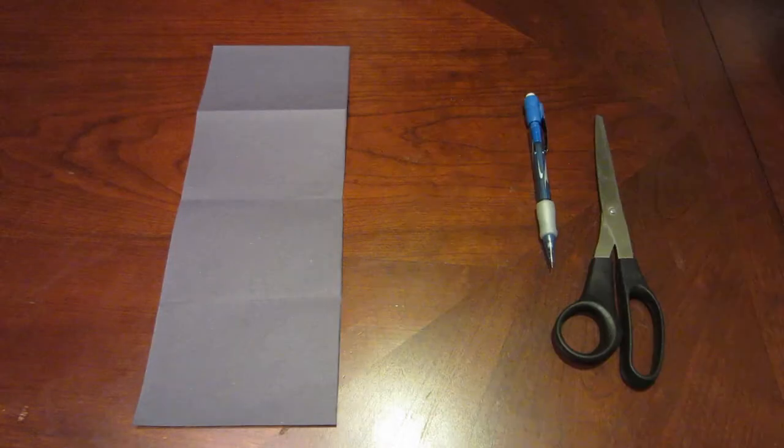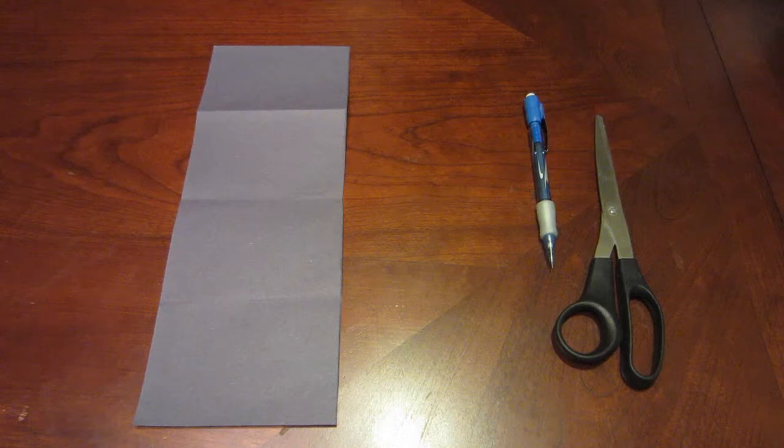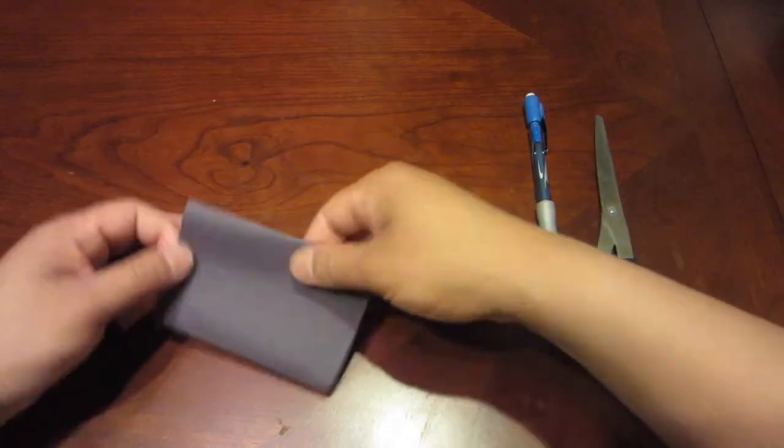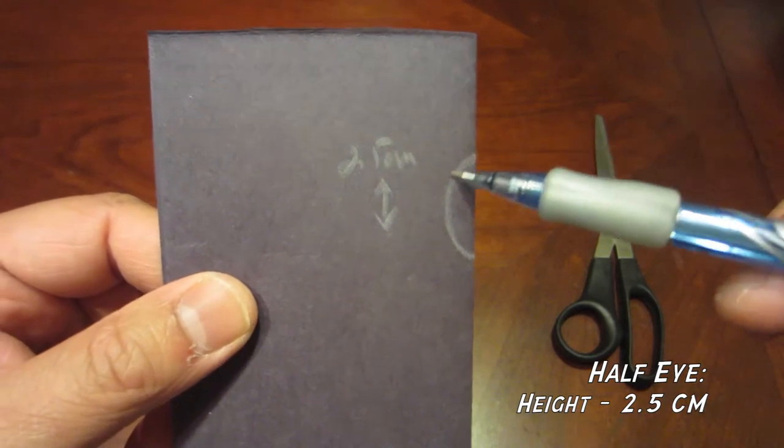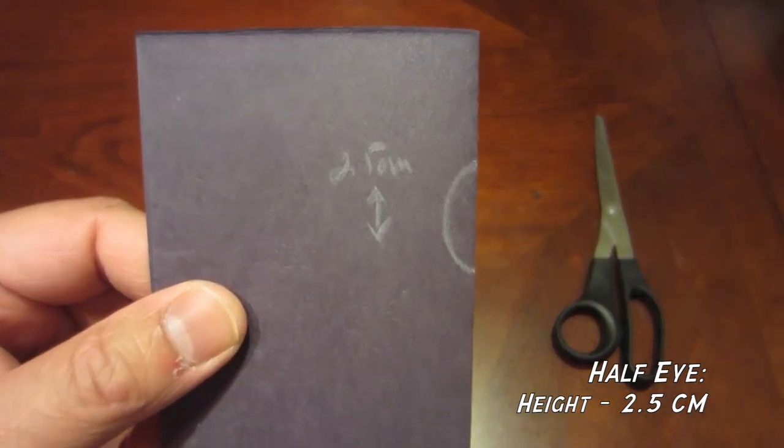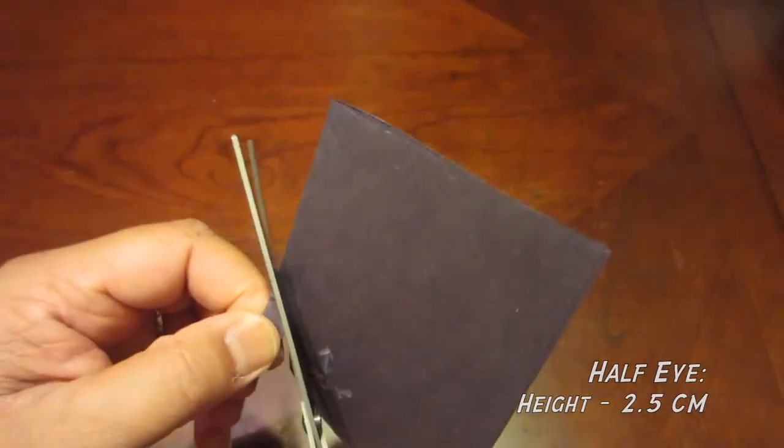Time for the eyes. Take your black vertical half sheet and fold in half twice. Next, draw a half oval shape on one side of the fold like this. Measurements are posted. When ready, start cutting out. You should have two eyes like this.